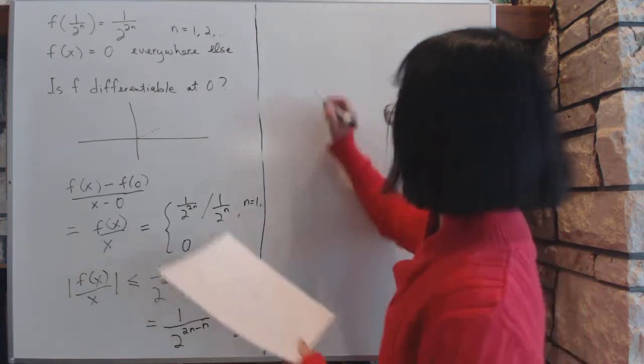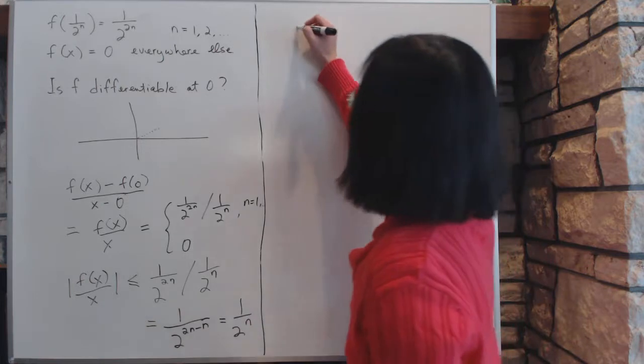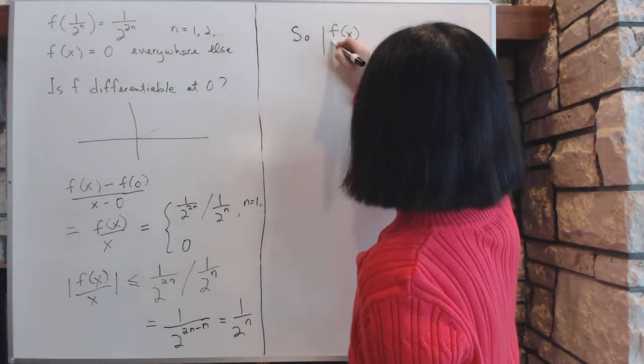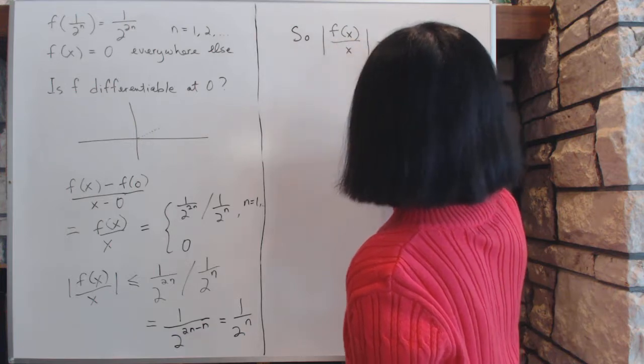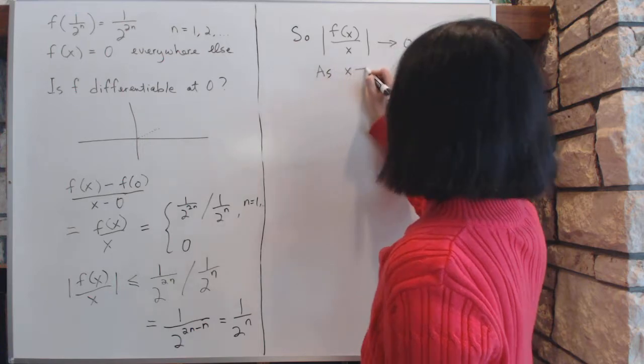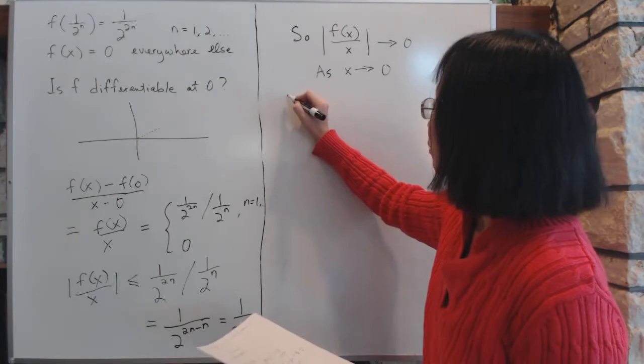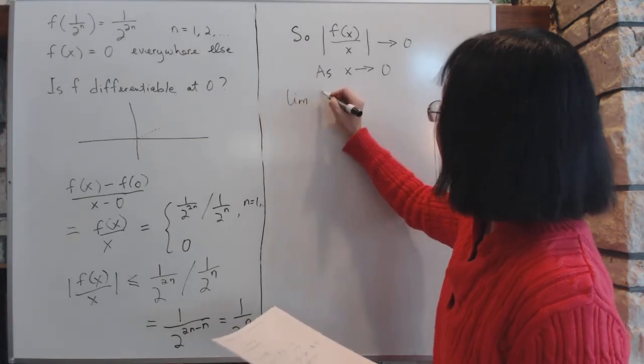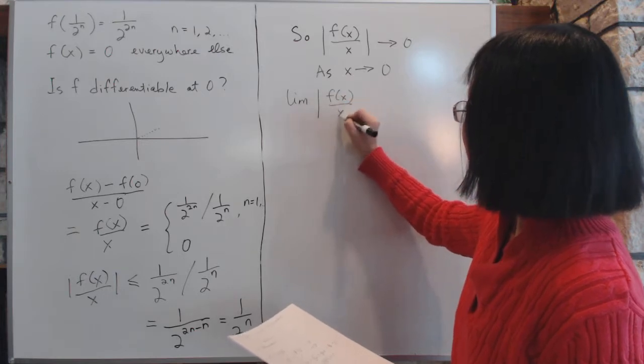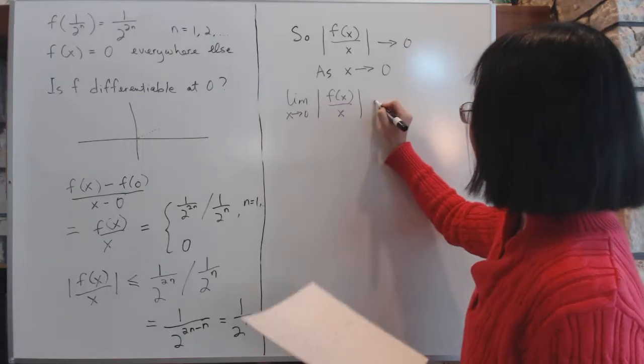This means this is going to go to 0 as x goes to 0, which means the limit exists.